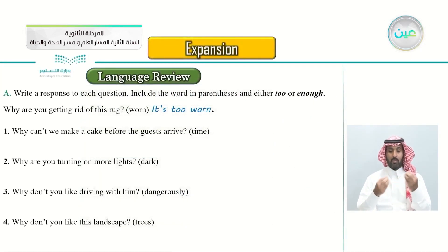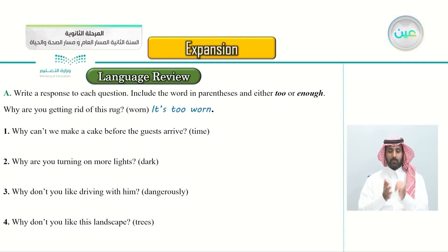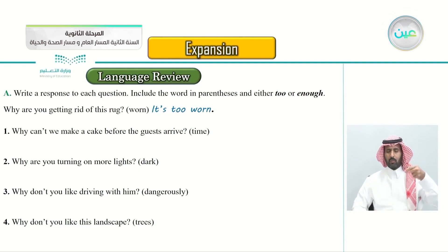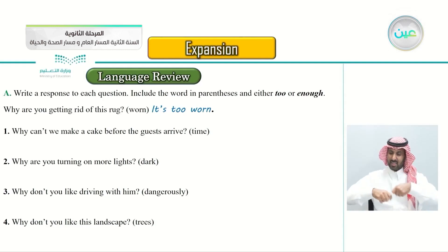We're taking here the language review Exercise A: write a response to each question. We have some questions and we'll be writing a response to each one. Include the word in the parenthesis and use either 'too' or 'enough'. For example, why are you getting rid of this rug? The word is 'worn' — you say 'it's too worn', so we'll be using 'too' or 'enough'.